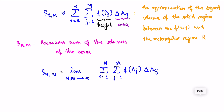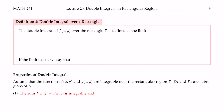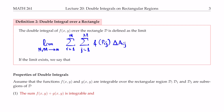In definition 2, the double integral over a rectangular region is defined as the limit as n, m go to infinity of the summation for i from 1 to n and j from 1 to m of f of P sub ij times delta A sub ij. Instead of writing the limit and summation notation each time, we use the notation of the double integral of f of x, y dA over the domain. If this limit exists, we say that f of x, y is integrable over the domain D.